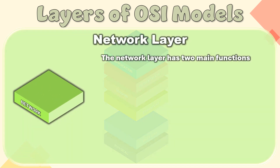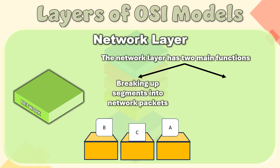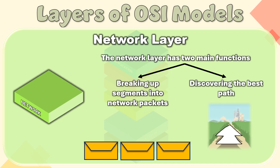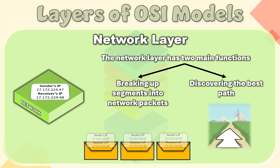Layer 3 – Network Layer. The network layer has two main functions. One is breaking up segments into network packets and reassembling the packets on the receiving end. The other is routing packets by discovering the best path across a physical network. The sender and receiver's IP addresses are placed in the header by the network layer.